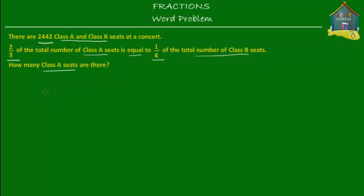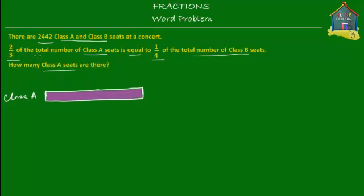If I make Class A seats here using a model — let's put purple in here — and if this model represents Class A seats, then two-thirds of this whole thing is equal to one-fourth of Class B seats.